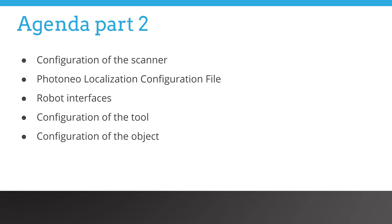Today, we will continue by connecting all the peripherals like the scanner and robot controller. We will explain the principles behind the integration of the vision system with the robotic program. In the final section, we will present the principles of a CAD-based bin picking configuration and upload the first two CAD models required.